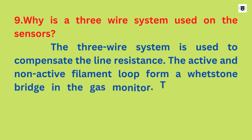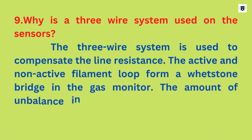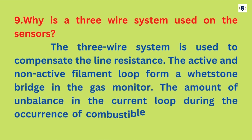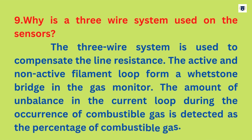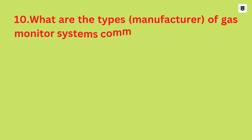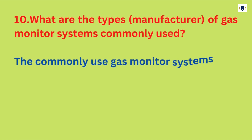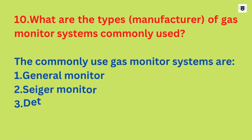Why is a three-wire system used on the sensors? The three-wire system is used to compensate for line resistance. The active and non-active filament loop form a Wheatstone bridge in the gas monitor. The amount of unbalance in the current loop during the occurrence of combustible gas is detected as the percentage of combustible gas.